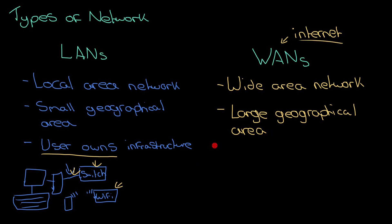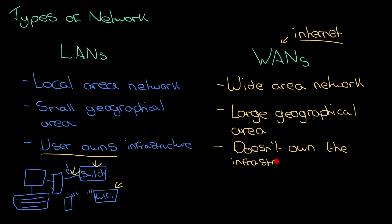Unlike a LAN, where you own the network infrastructure, with a WAN the user doesn't own the infrastructure — it's managed by somebody else. If you're connecting to the internet, you pay an internet service provider. It might be BT, Virgin, TalkTalk, or a company like that, who own all the cables that make the internet work. You pay them a fee every month to use some of their infrastructure so you can connect to the internet. That is a real key difference for WANs.